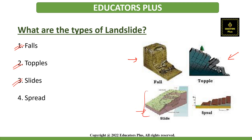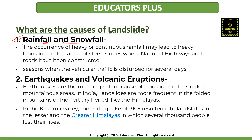The third type is slides. In this type, rocks, debris, and soil slide through slope-forming material. Then the next is spreads, which usually occur on very gentle slopes or on flat terrain.